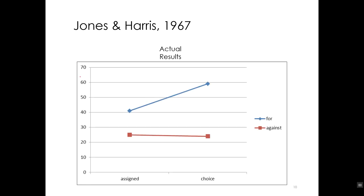Here are the actual results from Jones and Harris' study. We have the scale going from 10 to 70, and for a good graph you should always include the zero point so people know the proportions. One independent variable is on the x-axis, and the lines represent the other independent variable. Red is against — if your essay direction was against, it's red. If your essay direction was in favor, it's blue. The two levels on the x-axis are: you were assigned to write against or in favor, or you were given the choice.